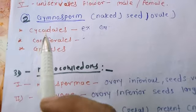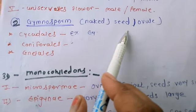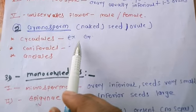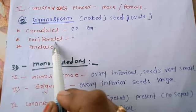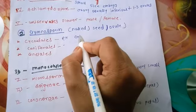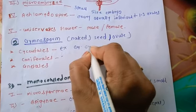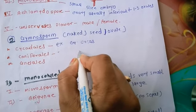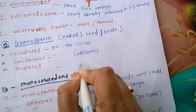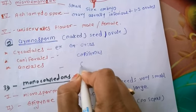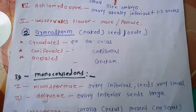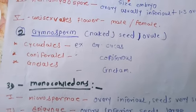The next type is gymnosperm, which means naked seed — seeds that can be seen easily with the naked eye. There are three types of gymnosperms: cycadales, coniferales, and gnetales. Examples of cycadales, coniferales, and gnetales are given. Gymnosperms are also called living fossil plants.